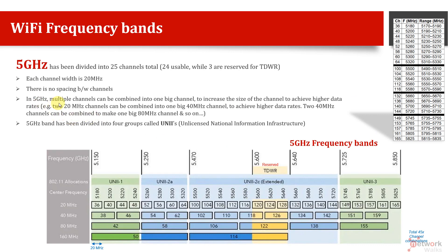So multiple channels can be combined together. The frequency bands have been divided into four UNII groups, and these are the corresponding frequency ranges.